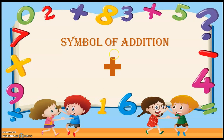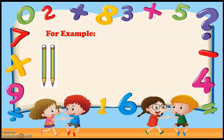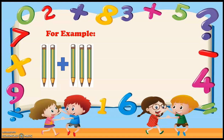Now let's see an example of how we add different numbers or objects. First example: I have two pencils, and I have to add these two pencils with more pencils. The word 'more' I am using for addition. So one, two, and more three pencils.